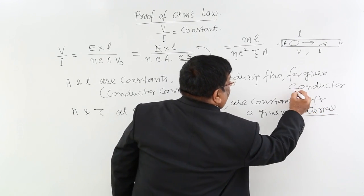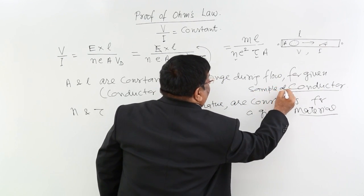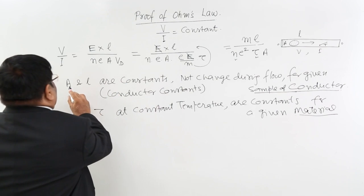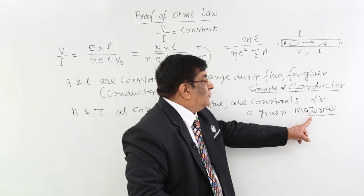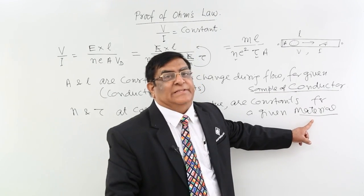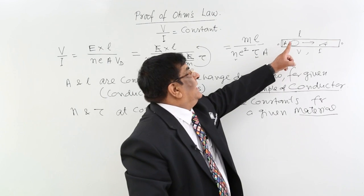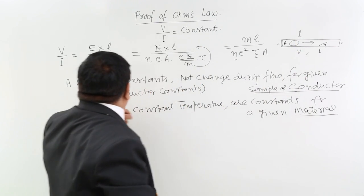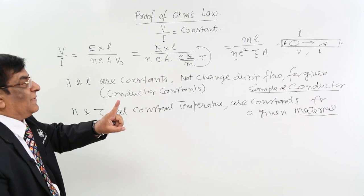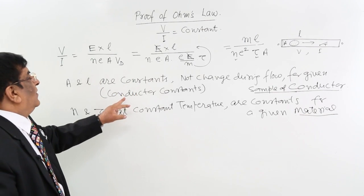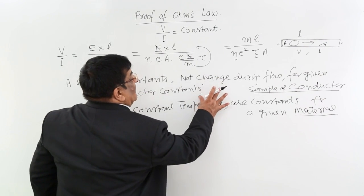From sample to sample, A and L may change, but N and tau will change only from material to material — sample to sample they will not change; they remain the same. So sample to sample, only L and A will change; everything else remains constant. If we take one sample, then L and A also become constant, known as conductor constants for that given sample.